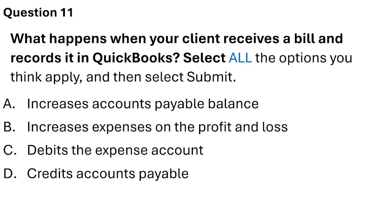Question 11. What happens when your client receives a bill and records it in QuickBooks? The four options are: increases Accounts Payable balance, increases expense on the P&L, debits the expense account, and credits Accounts Payable. All four options — A, B, C, and D — are correct answers.